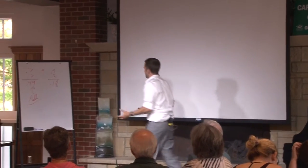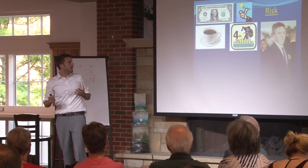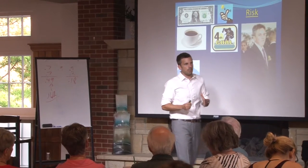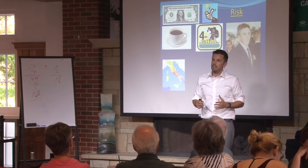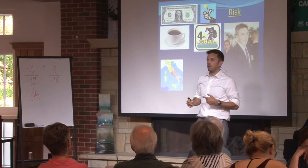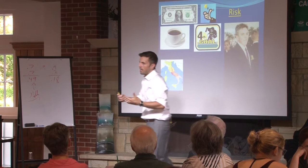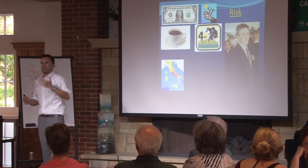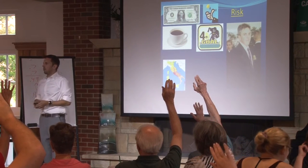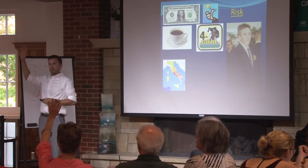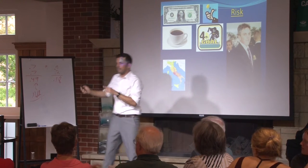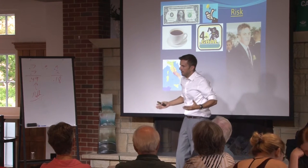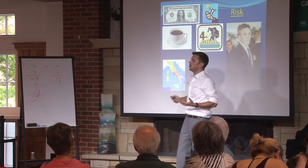Your choice is: right now I can give you a free one-week trip to Italy, or we'll flip a coin — if you lose, you get nothing, but if you win, you get a three-week trip to Italy. How many people are taking that one-week trip? How many of you are rolling the dice? The point is, if you map it out, three weeks every other time ends up being more days in Italy. So we tend to overvalue certain things.